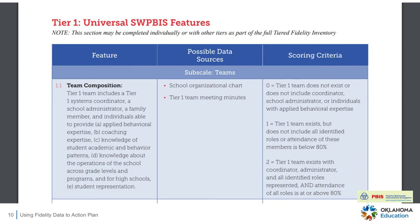This is an example of one feature of the Tier 1 PBIS TFI. The feature is a specific aspect of the PBIS framework. The TFI includes possible sources where the evaluator can get the information, which helps the school see items that can be created to guide the implementation of PBIS. The TFI has three scoring options: a 0 means the feature is not being implemented, a 1 means partially implementing, and a 2 means the feature is fully in place and being implemented consistently. If you include representatives that meet all of these needs and the attendance is better than 80% at your meetings, you will receive a 2, or fully implemented, for this feature of the TFI.